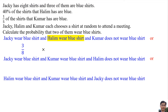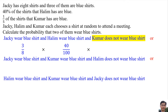The probability of Halim wearing a blue shirt is 40 over 100, since 40% of the shirts that Halim has are blue. 'And' means multiply. For Kuma, 1 over 5 of the shirts that Kuma has are blue.